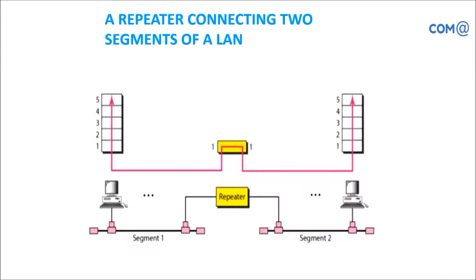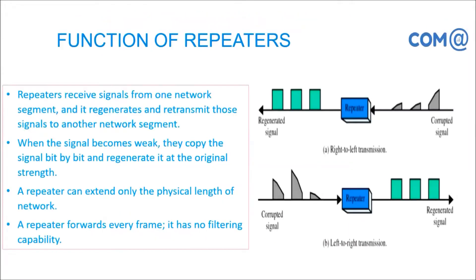Functions of a repeater: it receives signals from one network segment and retransmits to the next network segment. It gets data in a bad shape, and after processing with the repeater, it goes in a good format. Repeater forwards every frame and has no filtering capability — it doesn't have any intelligence to filter the frames. It is working in the data link layer and operates with the help of frames.